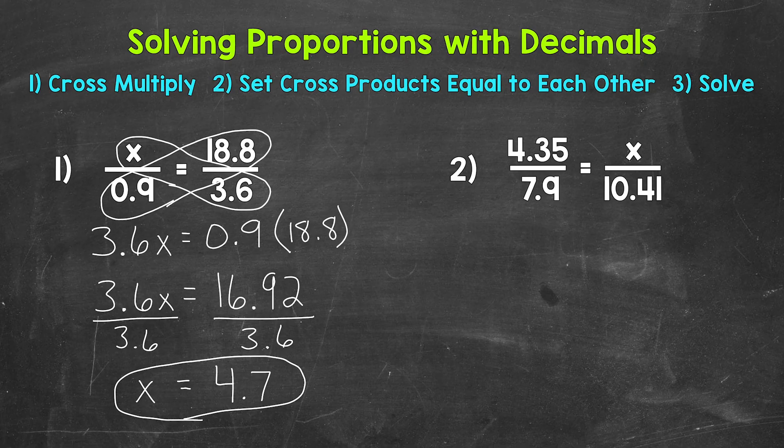Let's move on to number 2 where we have 4 and 35 hundredths to 7 and 9 tenths equals x to 10 and 41 hundredths.